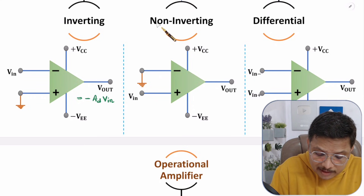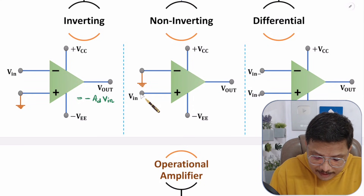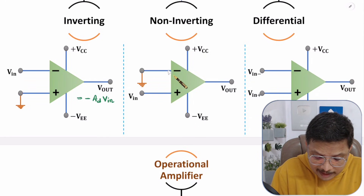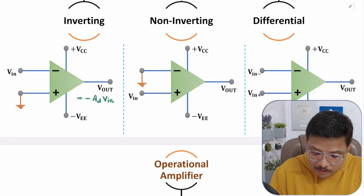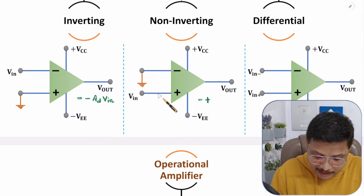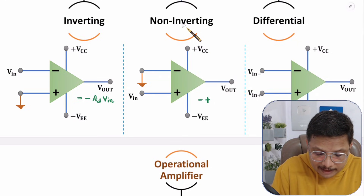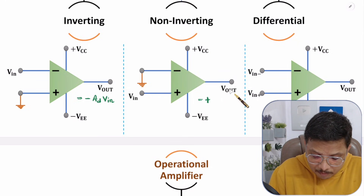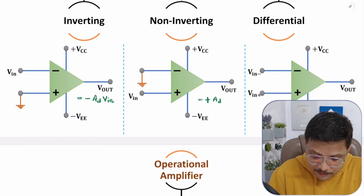In non-inverting configuration, input is given to the non-inverting terminal and the inverting terminal is grounded. So the output is positive, because input is given to the positive terminal. Output equals differential gain AD times VIN.